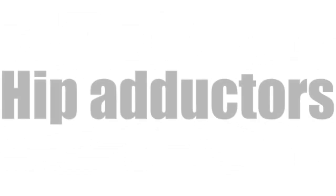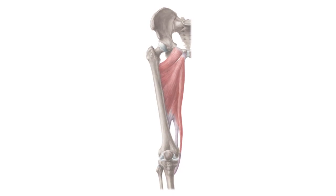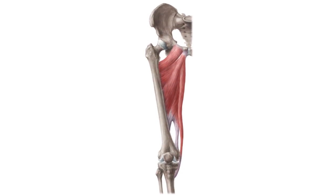Hey there, it's Matt from KenHub, and this tutorial focuses on a group of muscles called the hip adductors. This group is part of the inner hip musculature and ranges from the lower pelvic bone to the femur and knee region, lying in between the extensor and flexor group of the thigh muscles. The hip adductors shape the surface anatomy of the medial thigh.